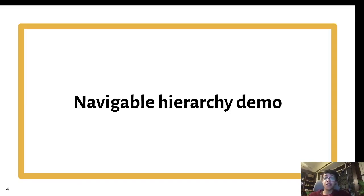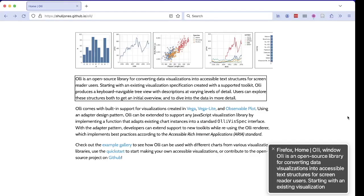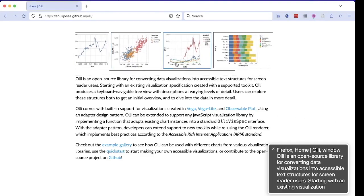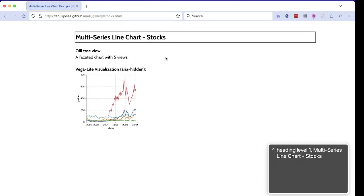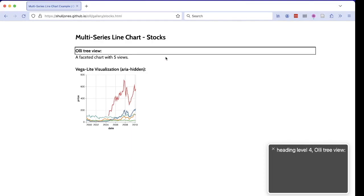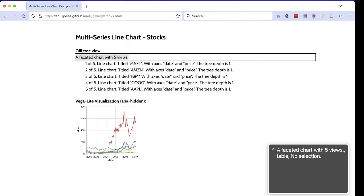I'll give you a quick demonstration of how a navigable hierarchy works using my group's open source accessible visualization toolkit, OLLI. First, let's take a walk through OLLI. The toolkit works with a wide variety of types of visualization. Let's take a look at this one, which is the stock prices of five tech companies over a decade. OLLI takes that dataset as an input and outputs a description in the form of a navigable hierarchy.